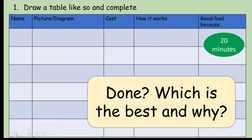The information you need to complete the table is in this video and will also be on Show My Homework as a PDF. If you'd like to, when I've finished explaining this task you can stop watching and complete the work using the information on Show My Homework. You need to complete all the different rows, and once you've done that, if you've got time, I'd like you to answer the question of which is the best and why. This is the end of the teaching section — the rest of this video is just the information sheets, so you can stop watching now or keep watching to see the information on screen.